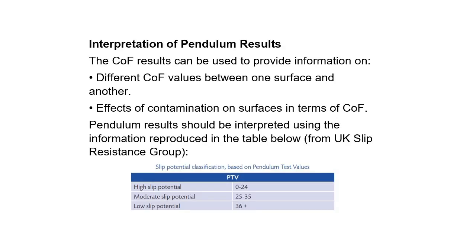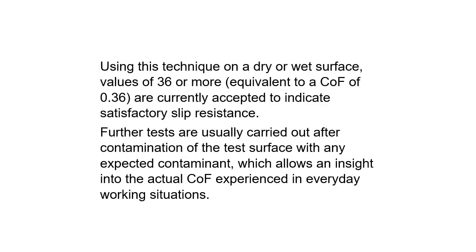Interpretation of Pendulum Results: the COF results can be used to provide information on different COF values between one surface and another, and the effects of contamination on surfaces in terms of COF. Pendulum results should be interpreted using information from the UK Slip Resistance Group. Using this technique on a dry or wet surface, values of 36 or more — equivalent to a COF of 0.36 — are currently accepted to indicate satisfactory slip resistance. Further tests are usually carried out after contamination of the test surface with any expected contaminant, allowing insight into the actual COF experienced in everyday working situations.